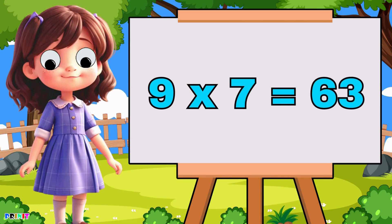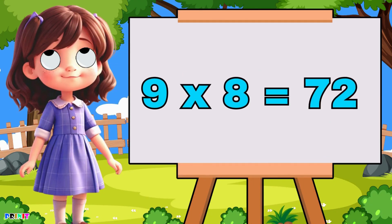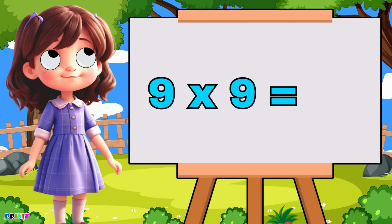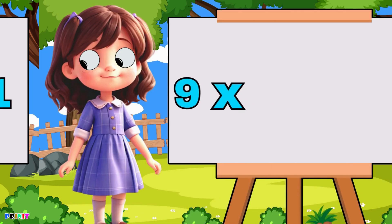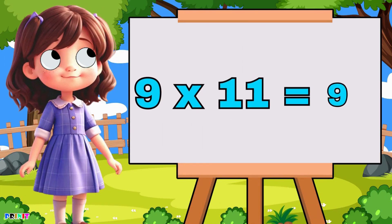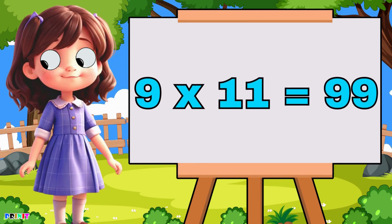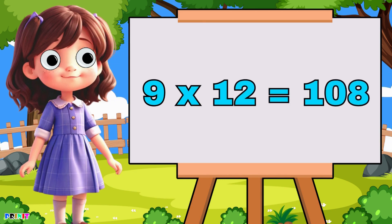Nine seven's are sixty-three, nine eight's are seventy-two, nine nine's are eighty-one, nine ten's are ninety-nine, nine twelve's are one hundred and eight.